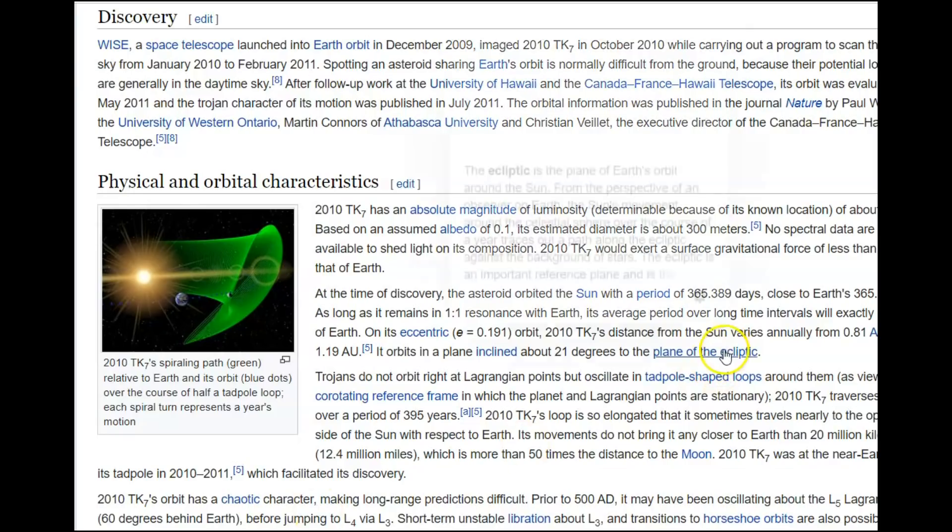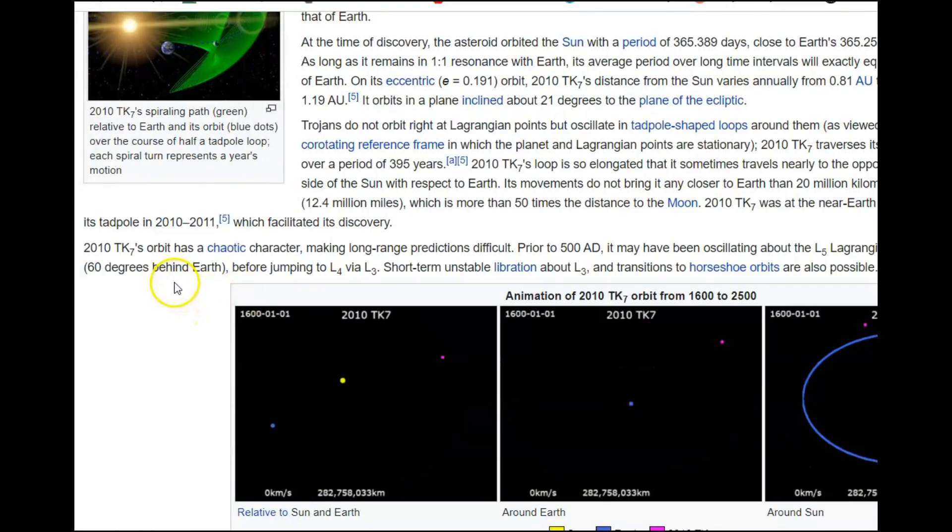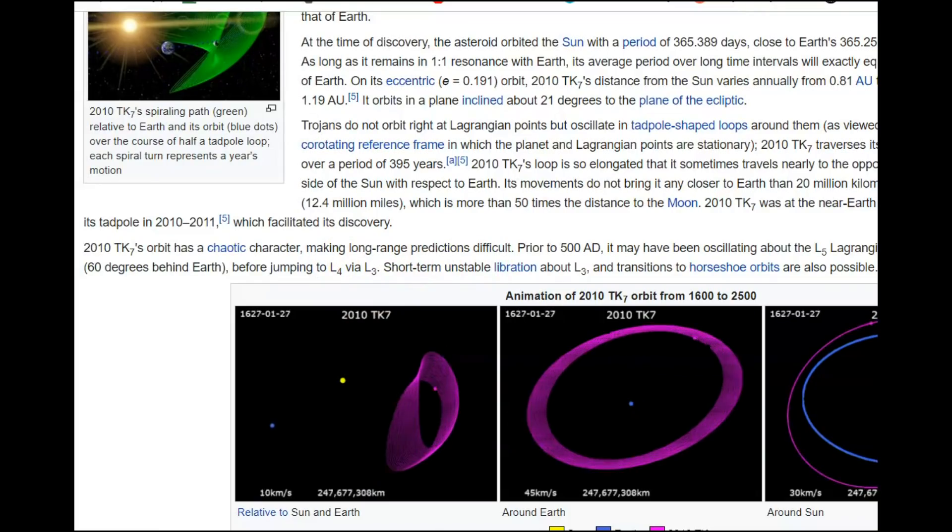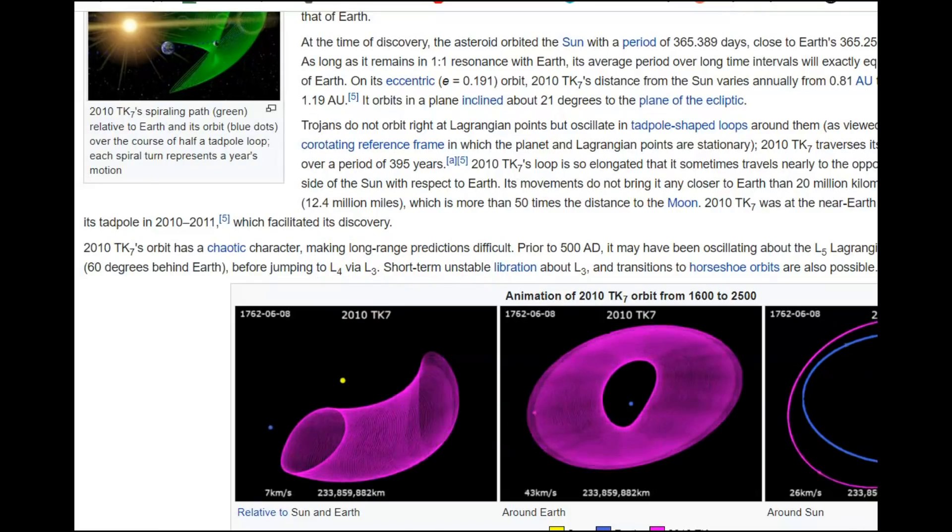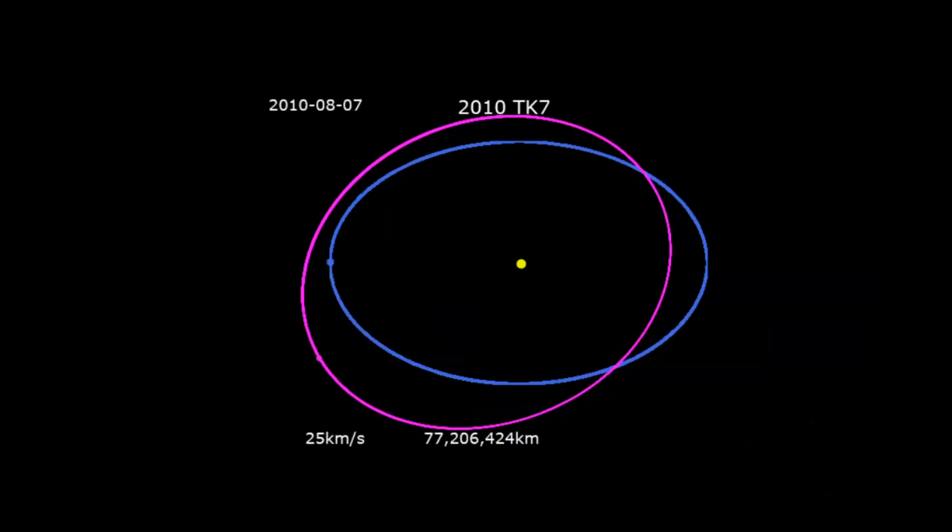This asteroid goes along in a tadpole-shaped loop around the Earth. 2010 TK7, it says here on Wikipedia, has a chaotic characteristic making long-range predictions difficult. It says here the Lagrangian point is 60 degrees behind Earth before jumping to another point. Short-term unstable vibration transitions to horseshoe orbits are possible, and there's several diagrams showing how close this asteroid actually gets to the Earth.